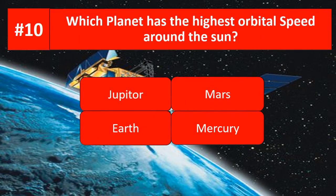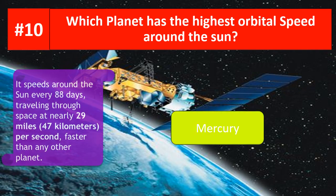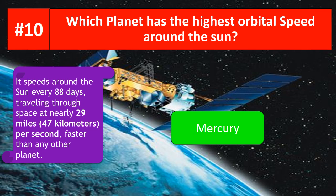Last question: which planet has the highest orbital speed around the sun? Is it Jupiter, Mars, Earth, or Mercury? Yes, it's Mercury. It speeds around the sun every 88 days, travelling through space at nearly 29 miles per second, which is faster than any other planet.